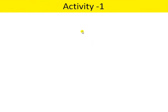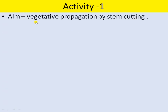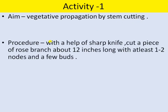Let us begin this lecture with the first topic, Activity 1st. The aim is vegetative propagation by stem cutting. You have to take a sharp knife and cut a piece of a rose branch about 12 inches long with at least one or two nodes.